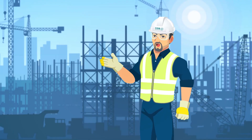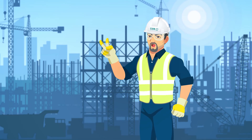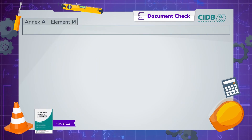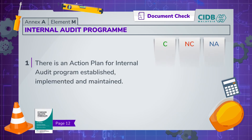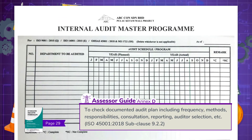Alright, we're almost done with document check. Just two more elements to go. Element M is where we determine whether there is an effective internal audit program in place. First, ascertain if an action plan for internal audit program has been established, implemented and maintained. The audit plan should include details such as frequency, methods, responsibilities, consultation, reporting and auditor selection.